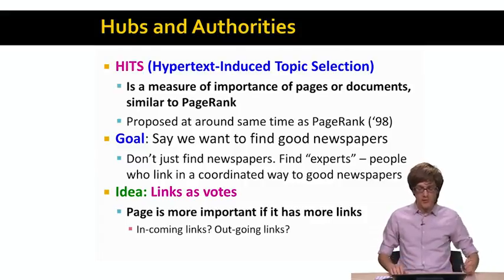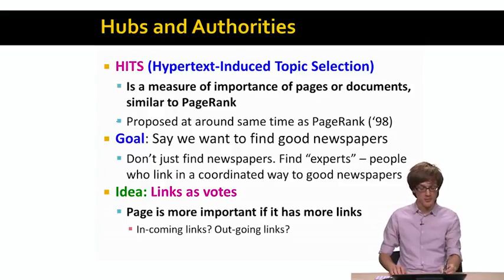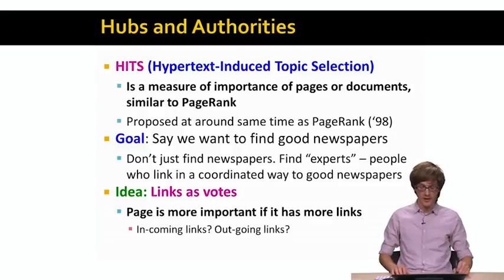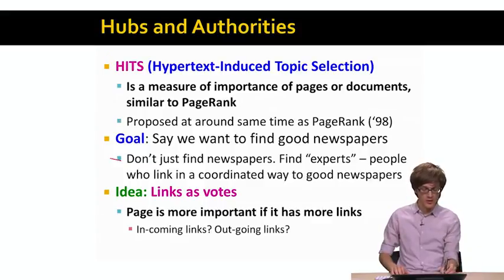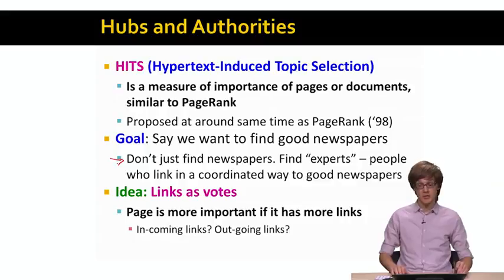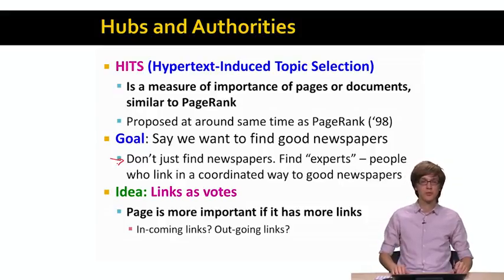The basic idea is that we want to measure the importance of pages or documents, similar to what we did with PageRank. This method was proposed around the same time as PageRank, around 1998–1999. The motivation is, for example, to find a set of good newspaper web pages — not just good newspapers, but experts who link in a coordinated way to a set of good newspapers.